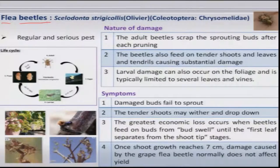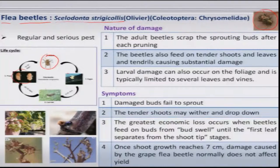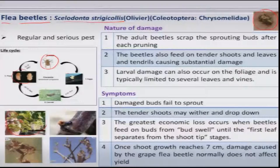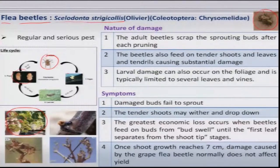The flea beetle, Scalodontas trigecolis, is another important pest where both adults and grubs are the damaging stages. The adults lay eggs in the soil around the trunk region, and the grubs feed on the roots of the vines; in severe cases with high populations, wilting symptoms are seen. The adult stage is most serious, attacking new flush or younger leaves soon after pruning, leading to drying up of leaves and affecting inflorescence development and bunch formation.